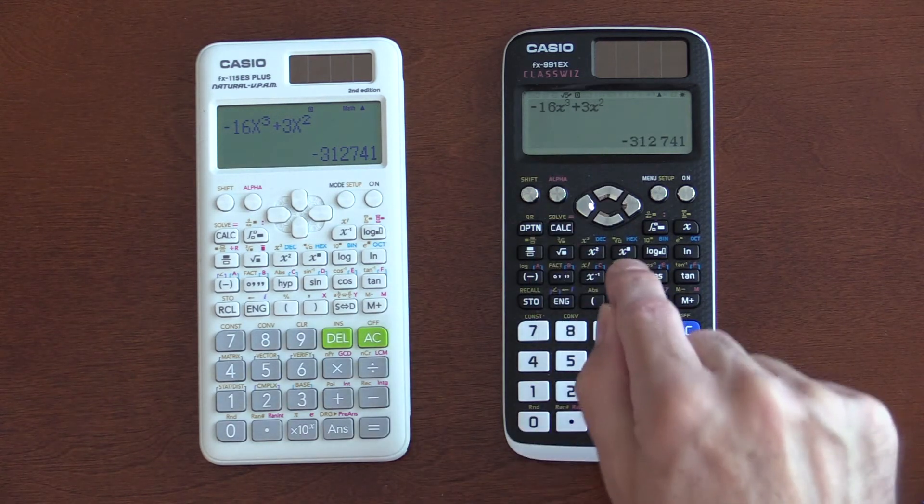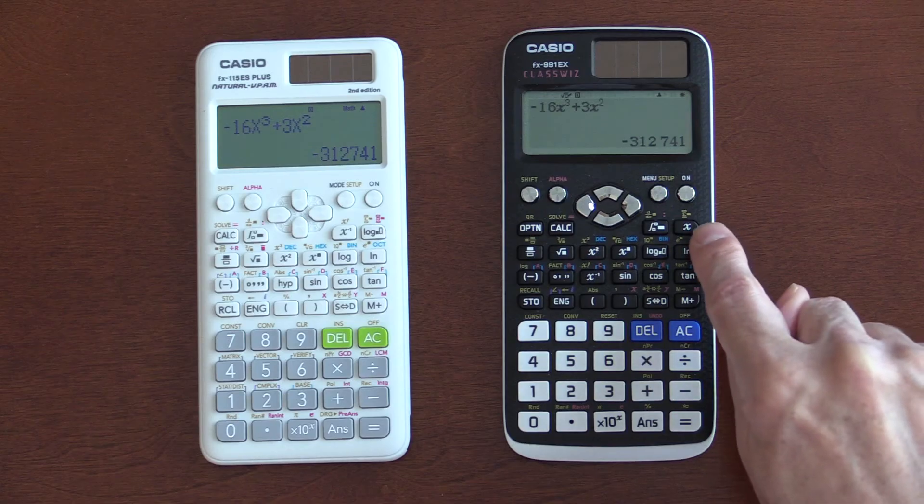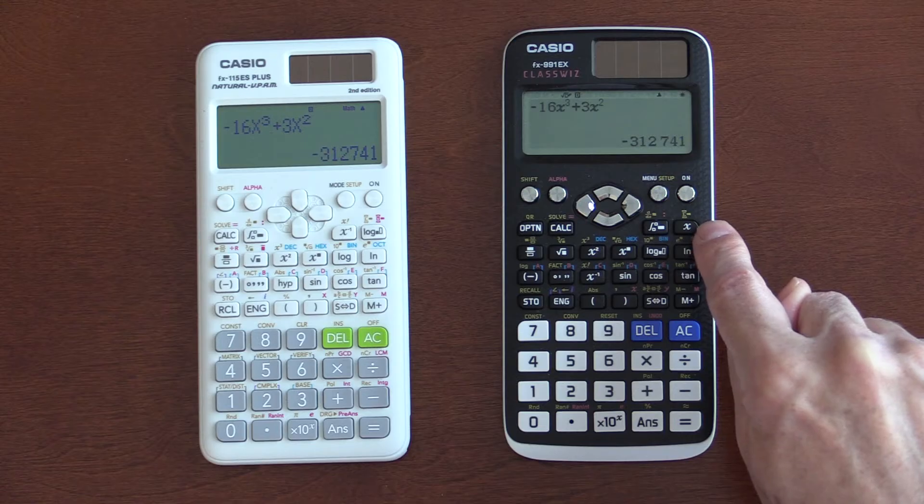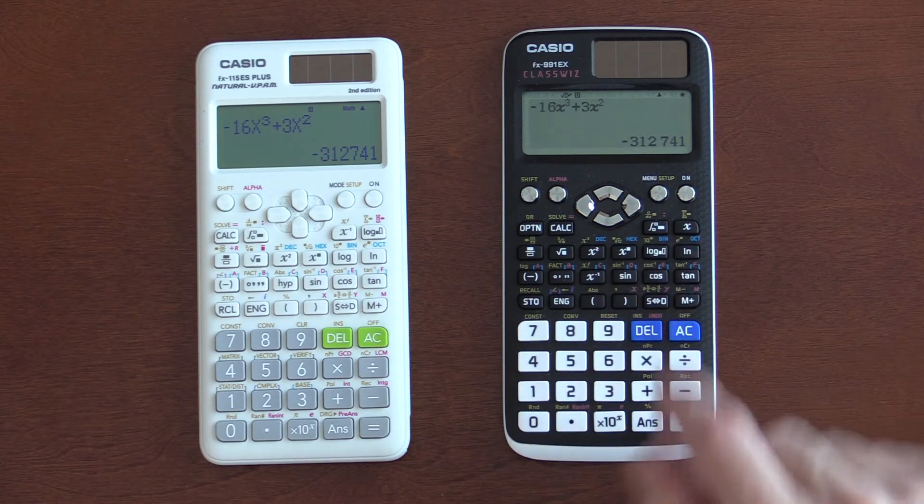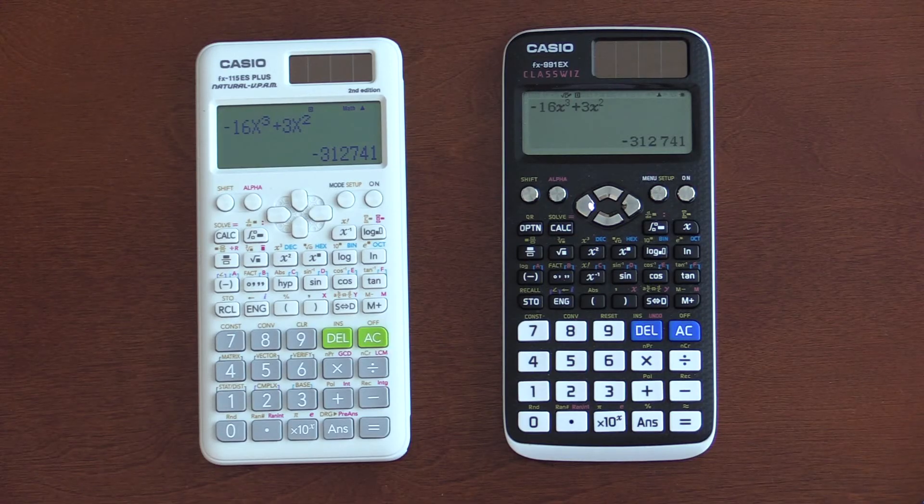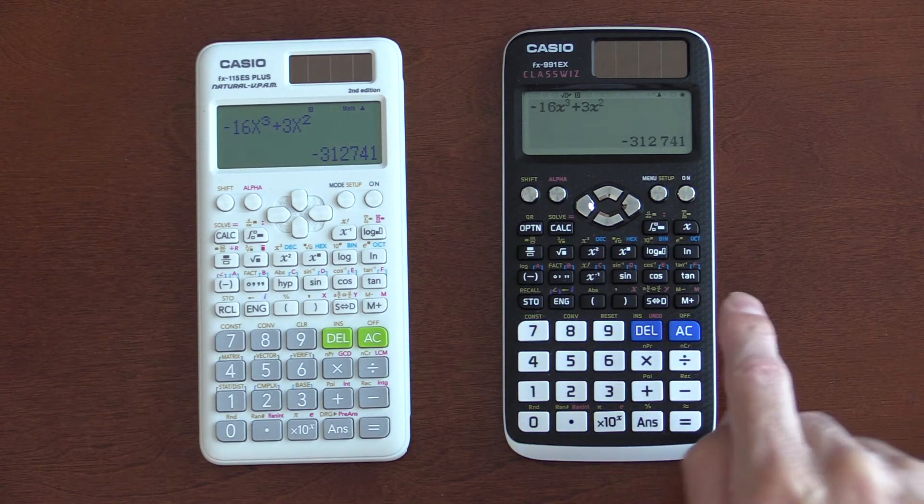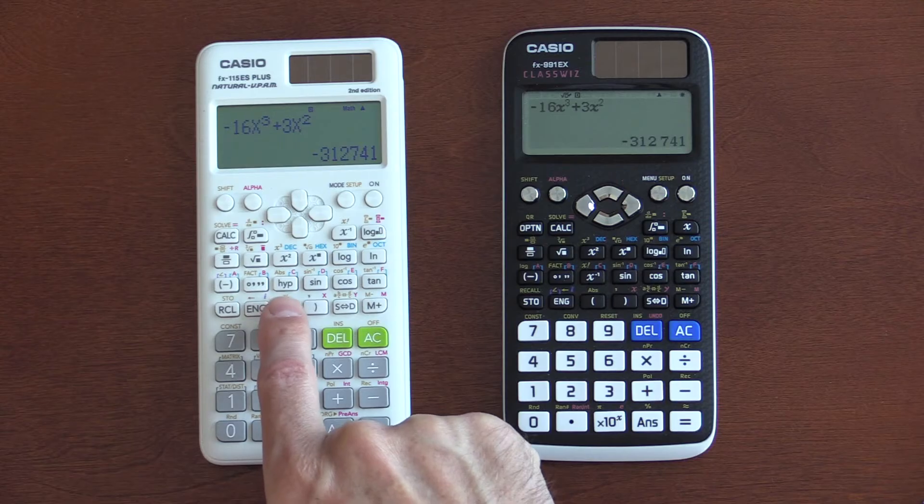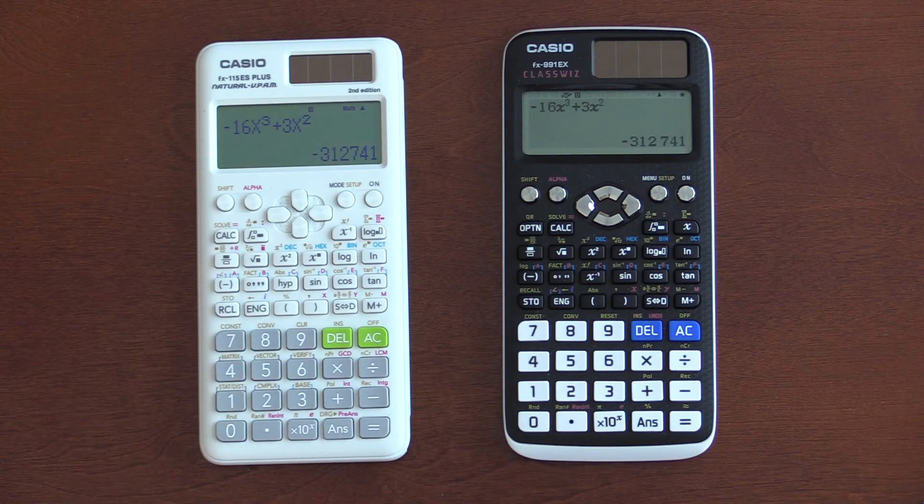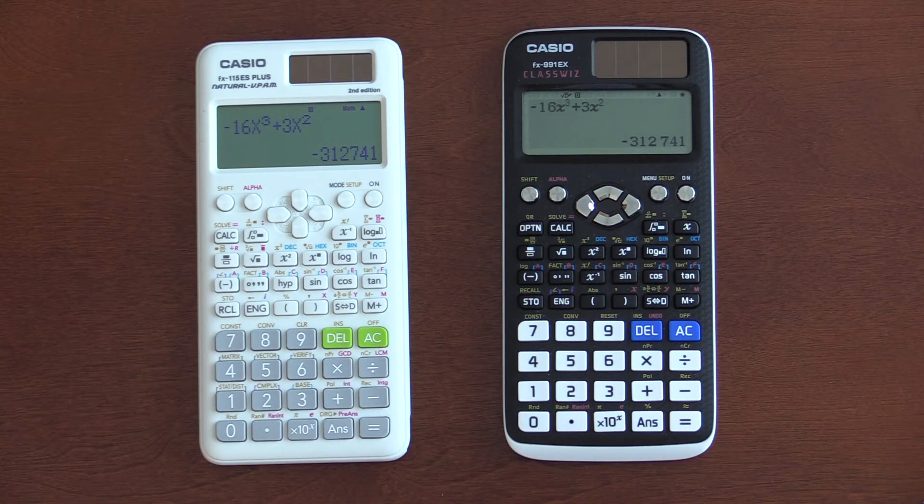When you're typing x's on the EX, you have a dedicated x key. I like that. For as often as x comes up, it's nice to have a dedicated key. I would have gladly given up hyperbolic, which I never have used.